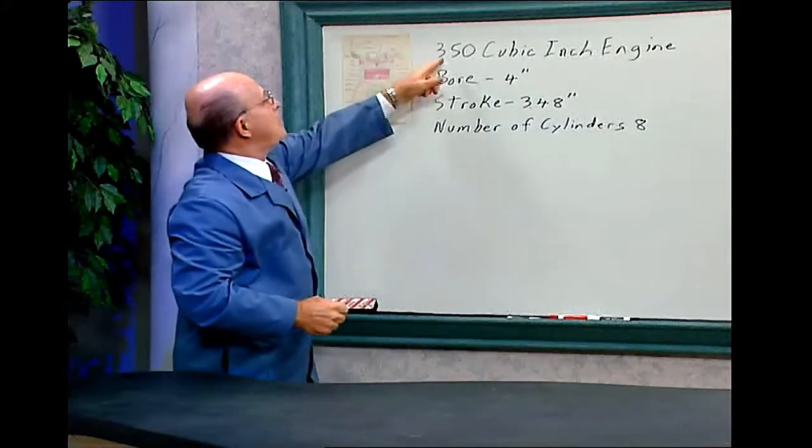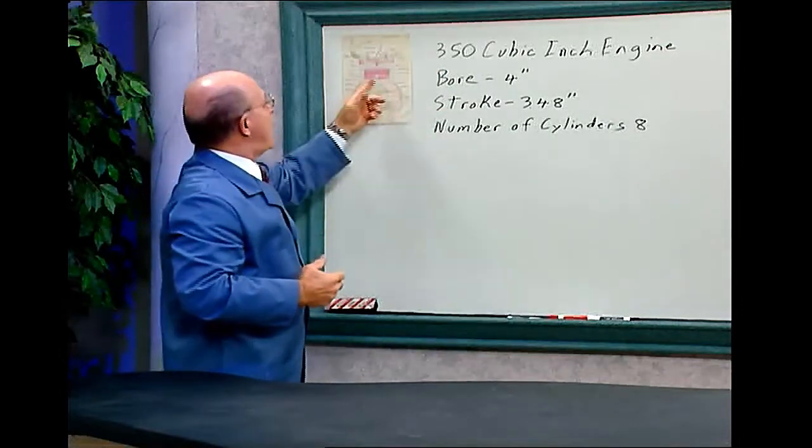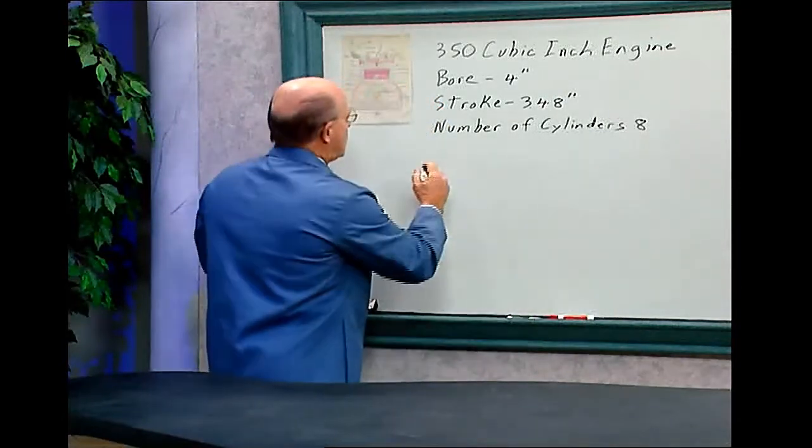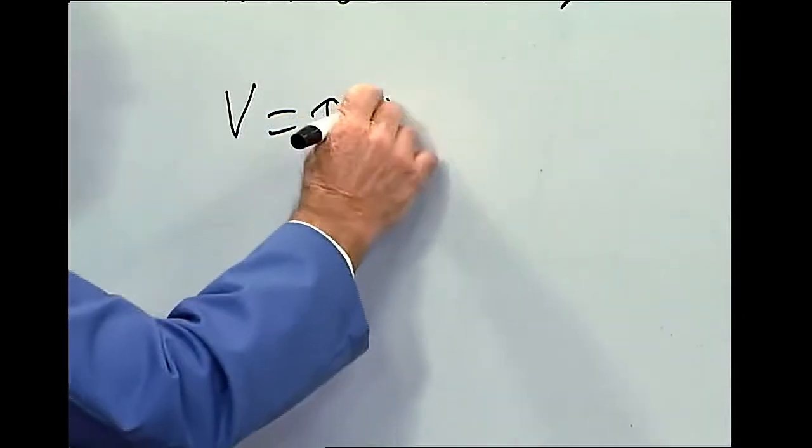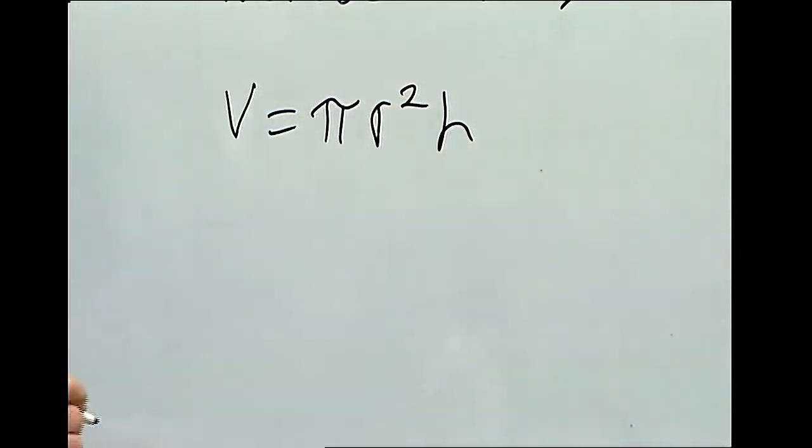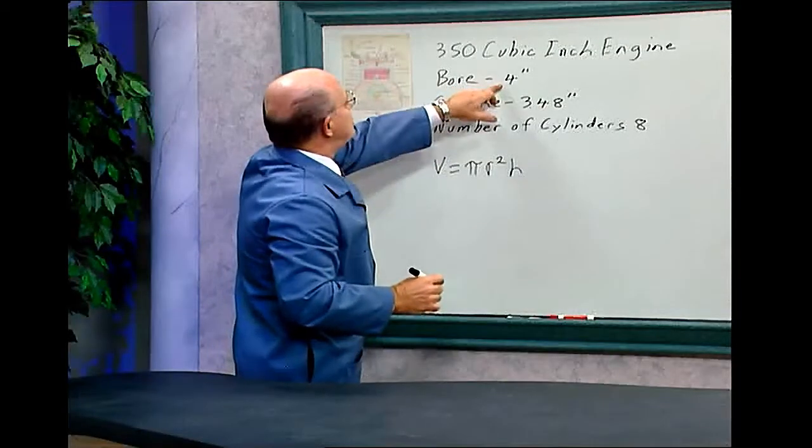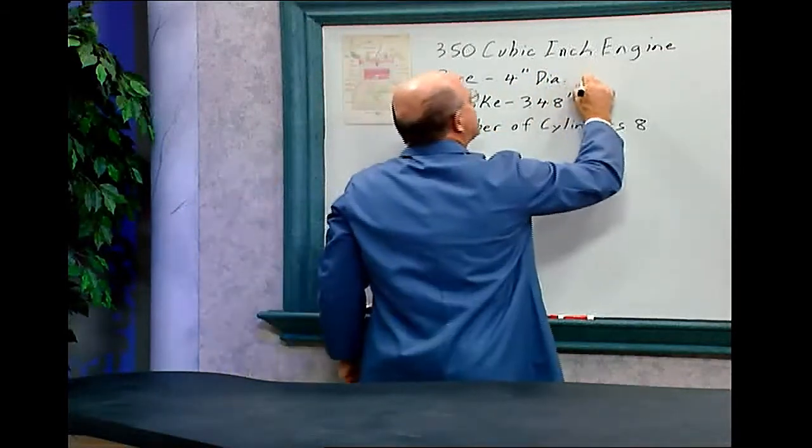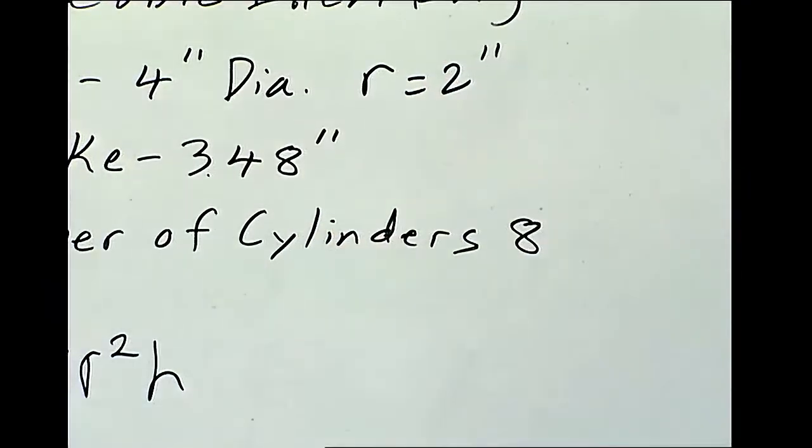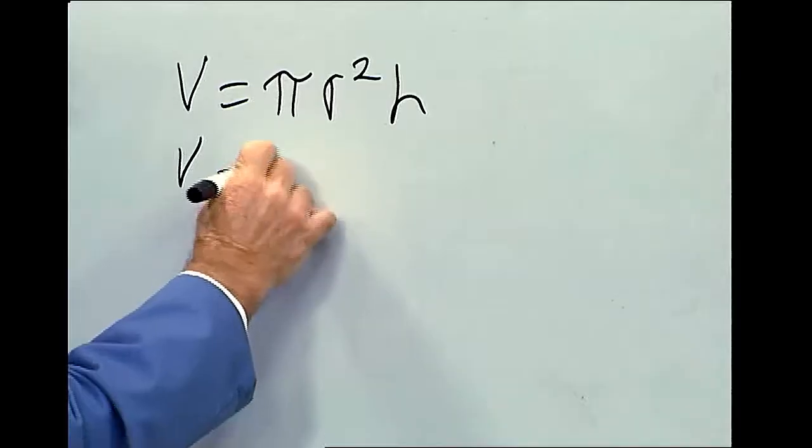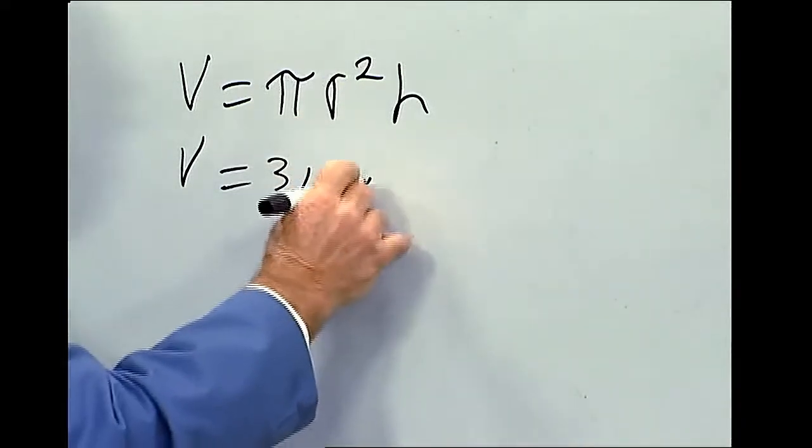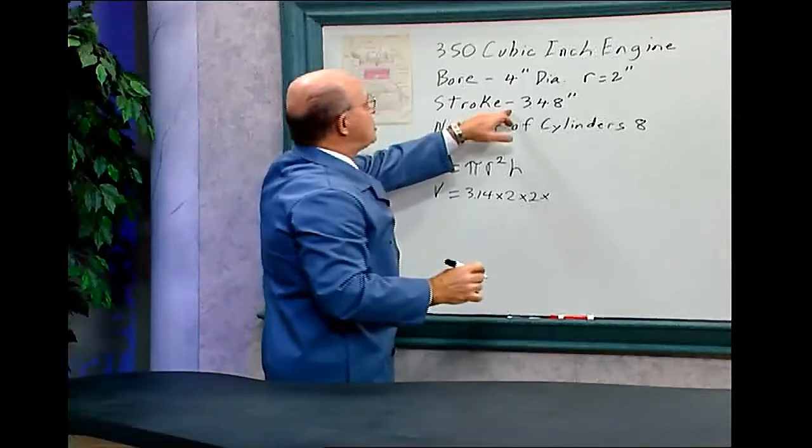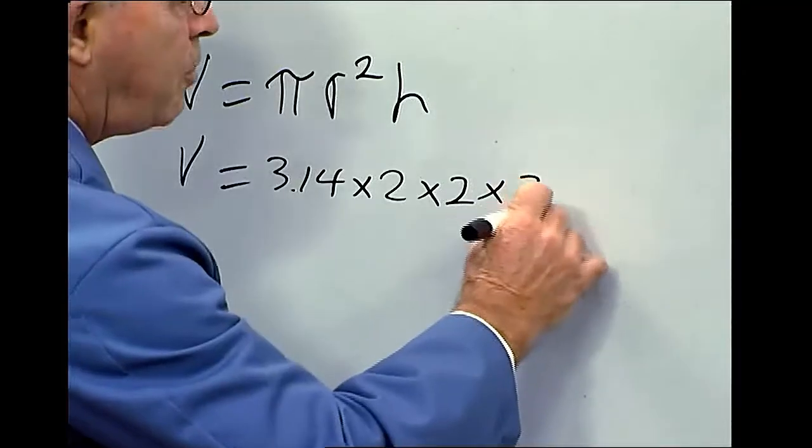Now let's find out how they get 350 cubic inch engine out of this engine. The bore is four inches. Remember, volume equals pi times radius squared times the height. The bore is four inches, it's the diameter. So the radius equals two inches. Let's put in the information: pi is 3.14 times the radius, 2, it's square again, times the height which is the stroke, 3.48.